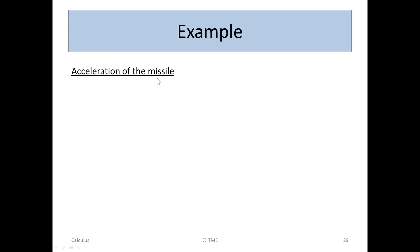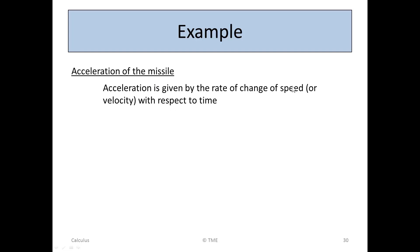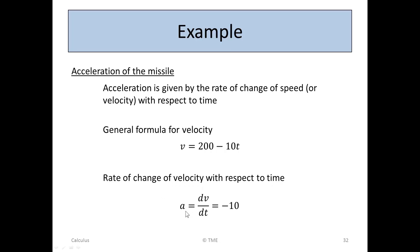For the acceleration of the missile, acceleration is the rate of change of velocity with respect to time. We have v = 200 − 10t, so a = dv/dt. Differentiating: 200 gives nothing, and −10t gives −10. So the acceleration is −10 meters per second squared (ms⁻²).